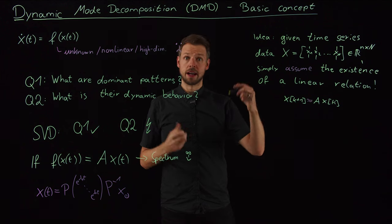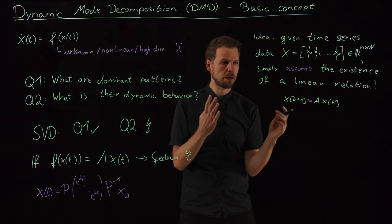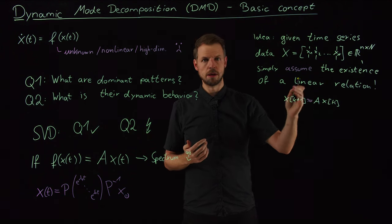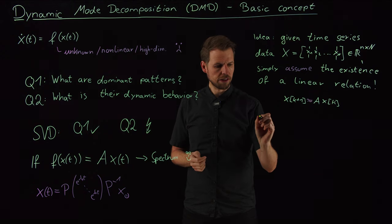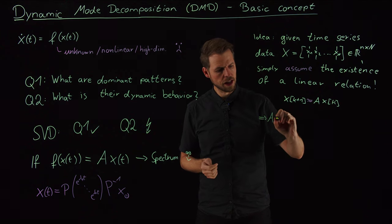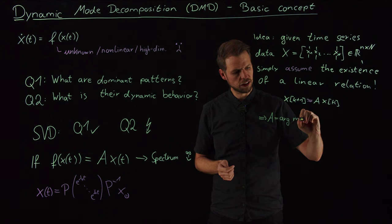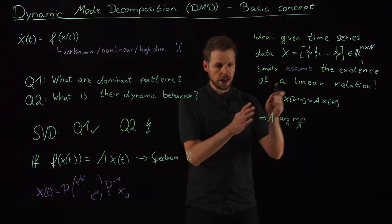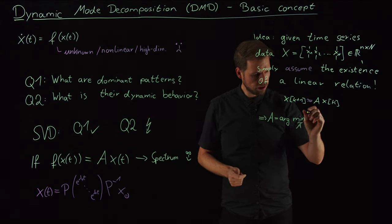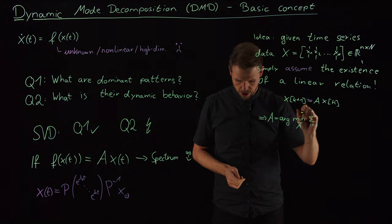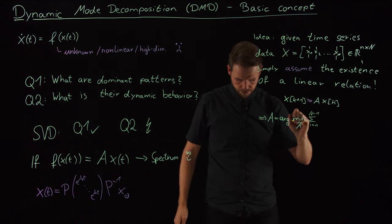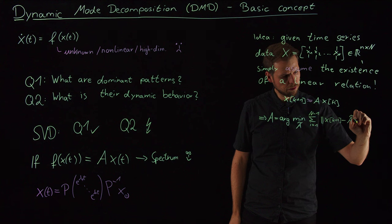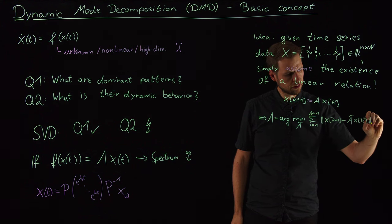And so what we do is we can solve an optimization problem to find this best fit matrix. So even if it may be a nonlinear system, let's try to find a matrix that in the best possible way, so with minimal error, predicts the mapping from x_k to x_{k+1}. So as before, let's just formulate this as an optimization problem. So we say this matrix A is the argmin, so I'm minimizing over all possible matrices A tilde. And the argument that minimizes, so the A that minimizes my loss function is what I get. And so this is the minimizer over my trajectory, sum from i=1 to n-1 of x_{k+1} minus A tilde times x_k.